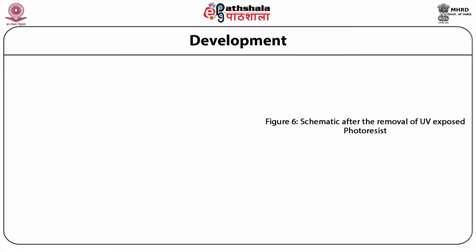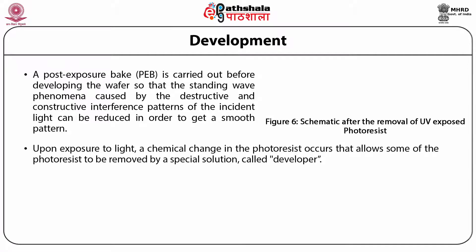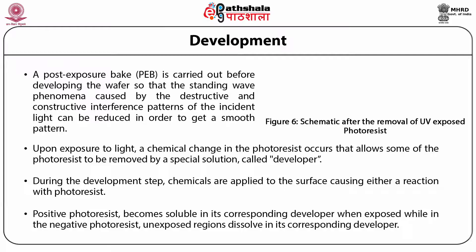The next step is development. A post-exposure bake (PEB) is carried out before developing the wafer so that the standing wave phenomena caused by destructive and constructive interference patterns of the incident light can be reduced, in order to get a smooth pattern. Upon exposure to light, a chemical change in the photoresist occurs which allows some of the photoresist to be removed by a special solution called developer. Positive photoresist becomes soluble in its corresponding developer when exposed, while in negative photoresist, unexposed regions dissolve in the developer. The figure shows the schematic after the removal of UV-exposed photoresist.